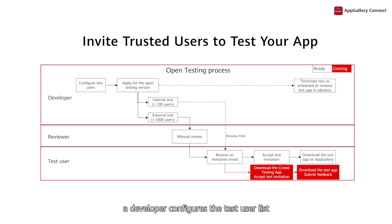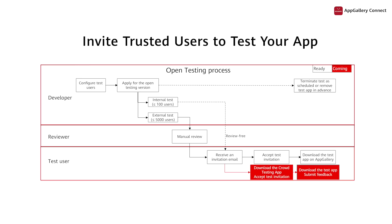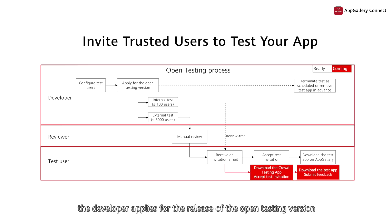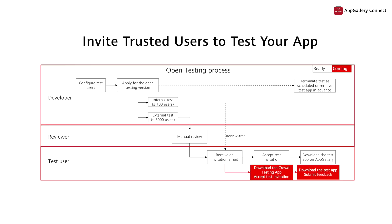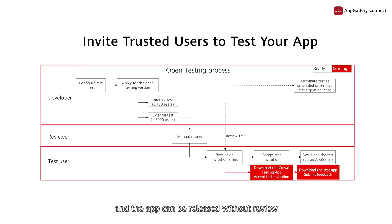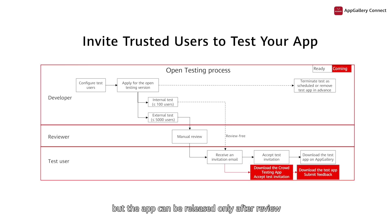To start, a developer configures the test user list and test scope in AppGallery Connect. Then, the developer applies for the release of the open testing version. The test type, that is internal or external test, must be specified during application. Up to 100 users can be invited for an internal test, and the app can be released without review. Up to 5,000 users can be invited for an external test, but the app can be released only after review.